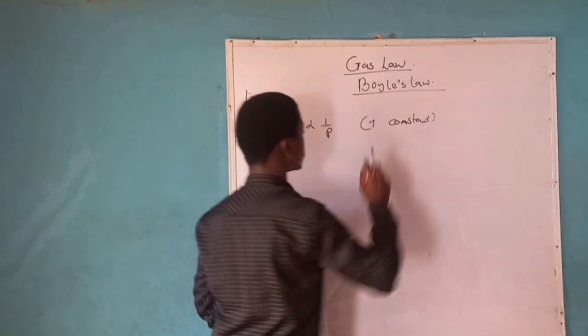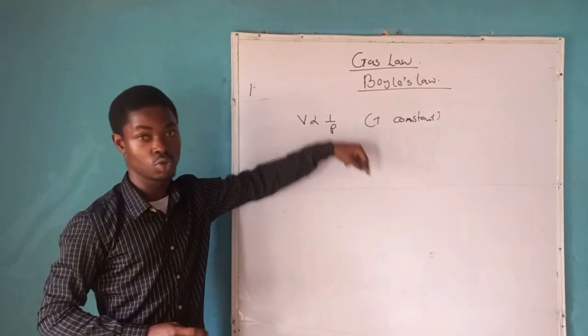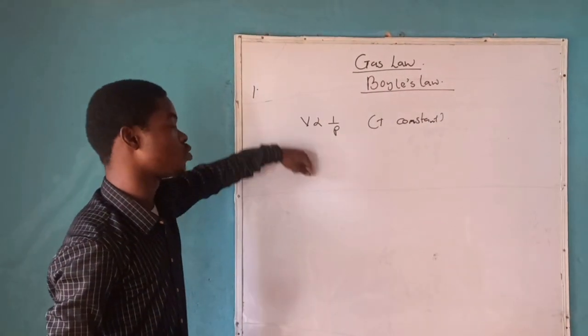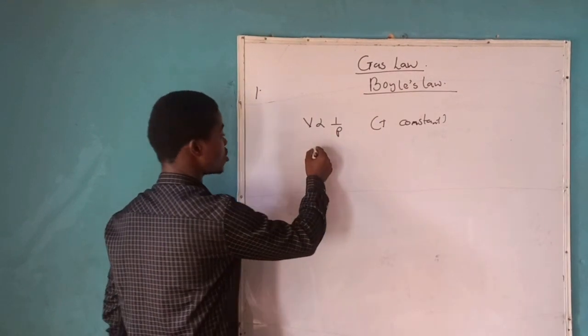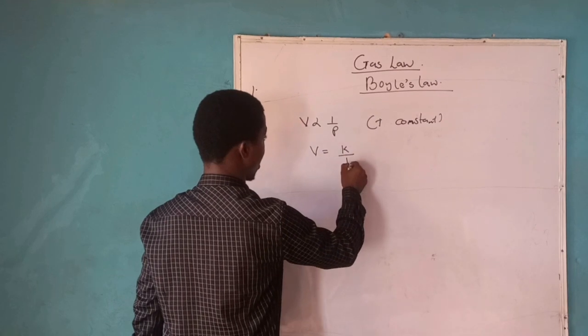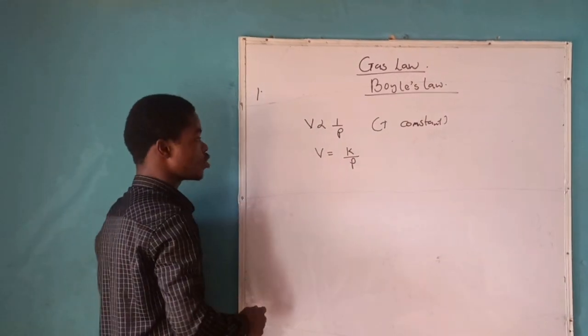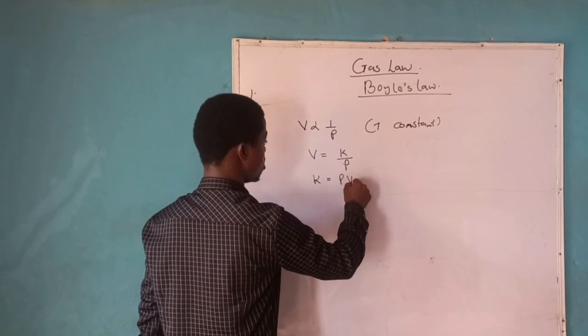What does that mean? It means anytime the volume of a gas is increased, the pressure will be decreased. And then if the volume is decreased, the pressure will be increased. So if I introduce a constant into this equation, I will have V equal to K over P. And if I cross-multiply, I will see my constant is equal to PV.